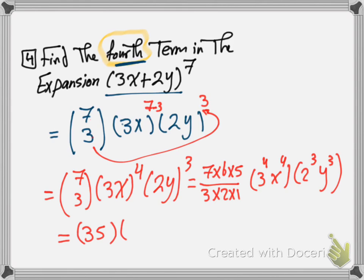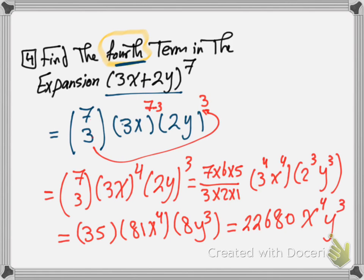Multiplied by 81 x^4, multiplied by 8 y^3, which equals 22,680 x^4 y^3. This is the method of how to find a specific term in expansions using the binomial theorem.